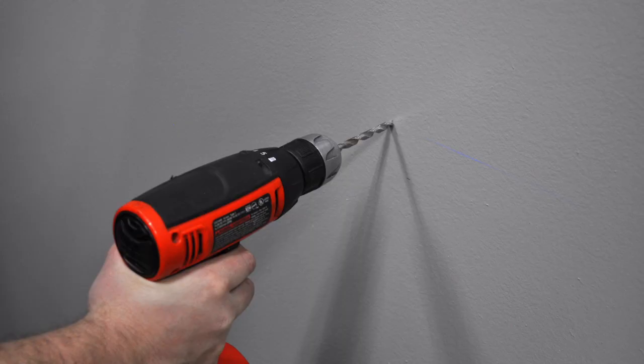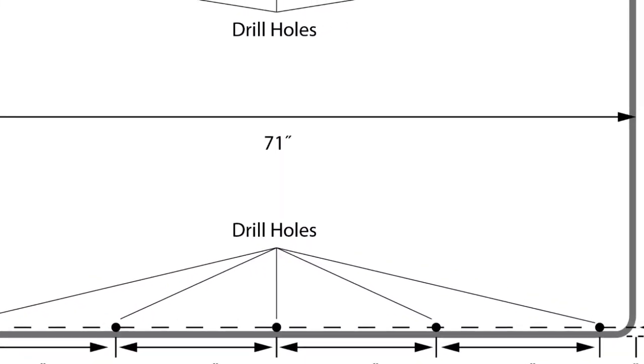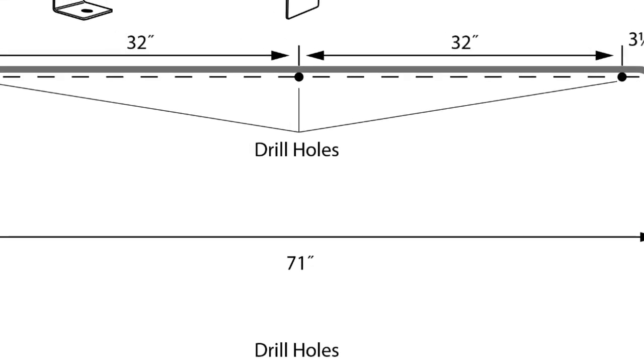If attaching to drywall, you'll need to drill 8 ¼ inch diameter holes as specified on your drawing.